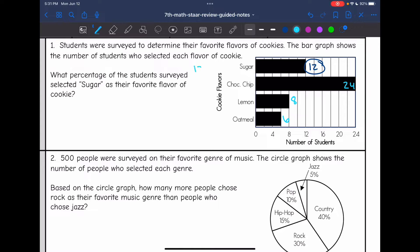And then 6 people right in between 4 and 8 chose oatmeal. So to figure out the total, I'm going to do 12 plus 24, which is 36. And then I'm going to add the lemon, which is 8. And 36 plus 8 is 44. And then I'm going to add the 6 oatmeal, which is 50.